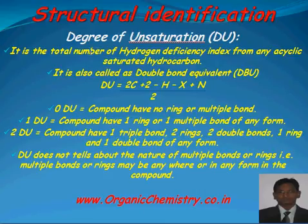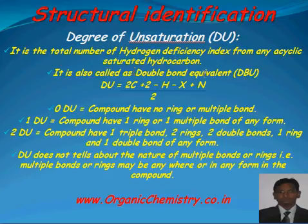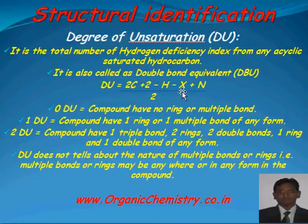First, I am discussing about the degree of unsaturation. It is the total number of hydrogen deficiency index from any acyclic saturated hydrocarbon. It is important that DU is calculated from the removal of hydrogen from any acyclic saturated hydrocarbon. It is also called as double bond equivalent, that is DBU. Mathematically, DU = (2C + 2 - H - halogens + N) / 2.